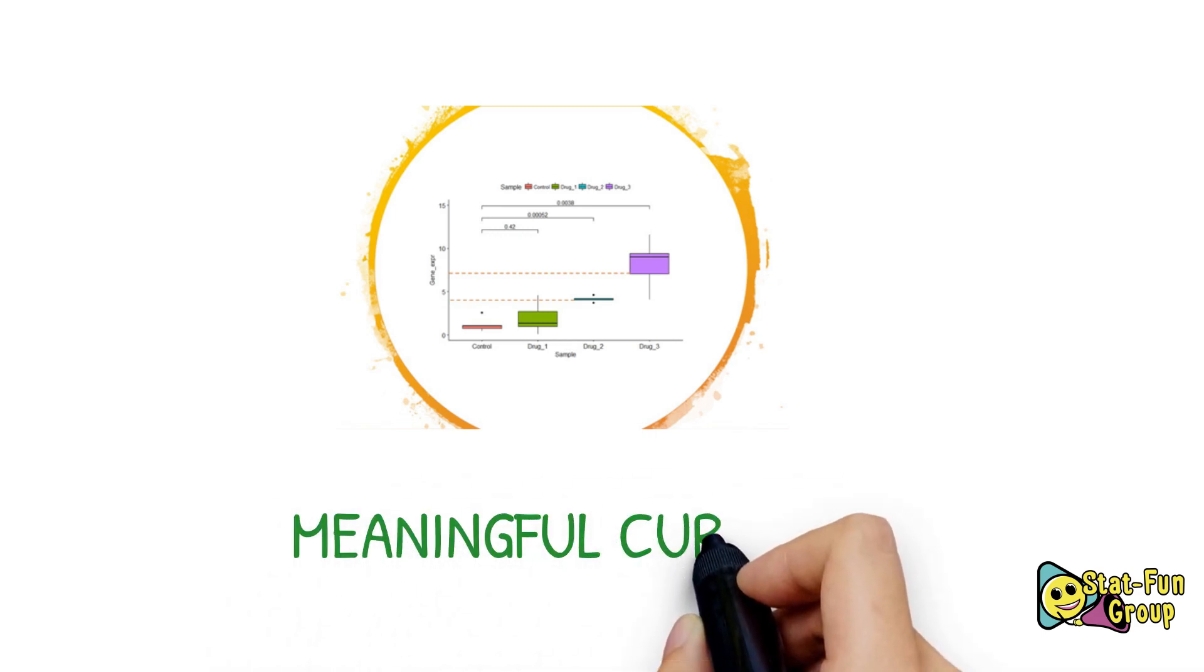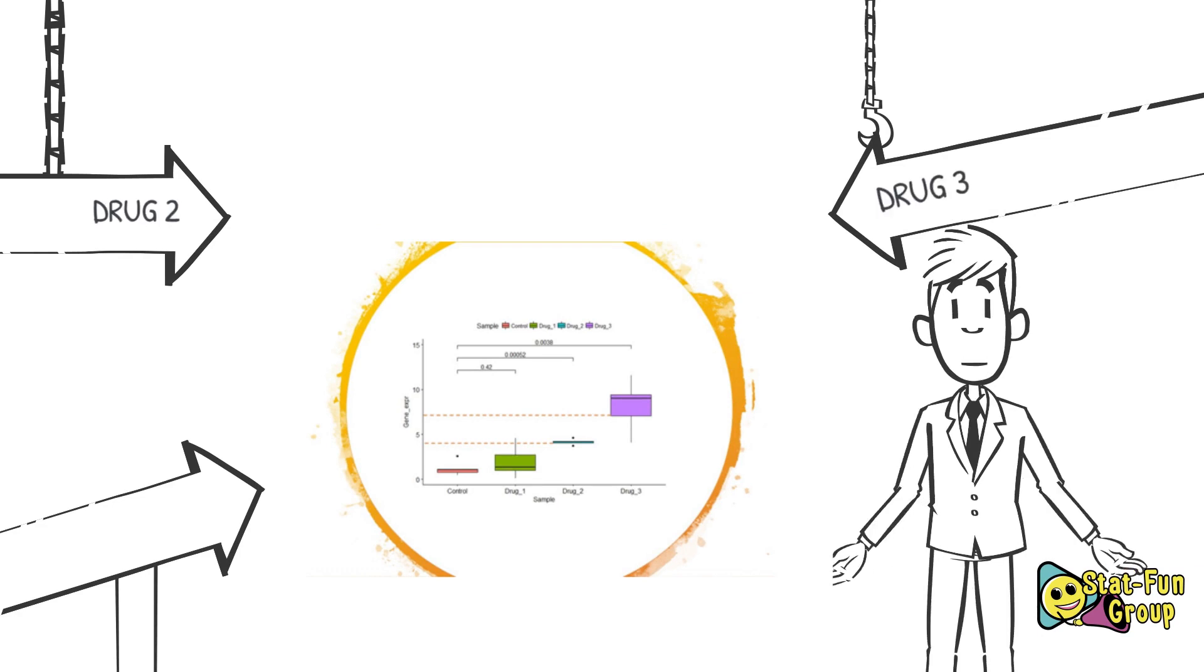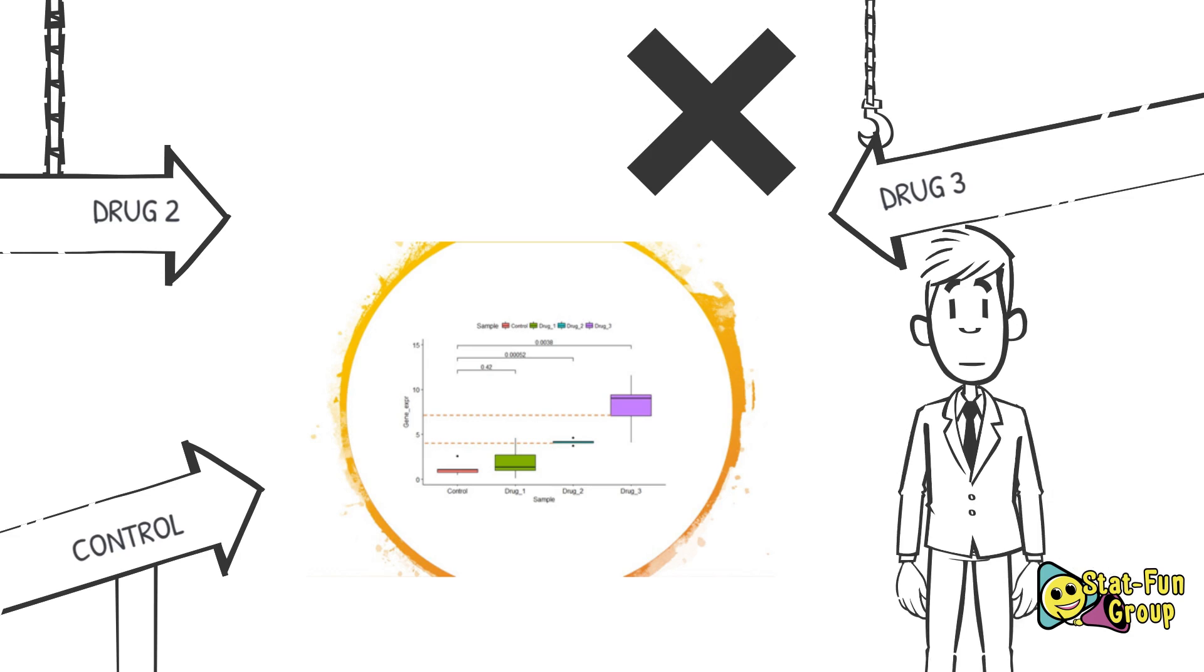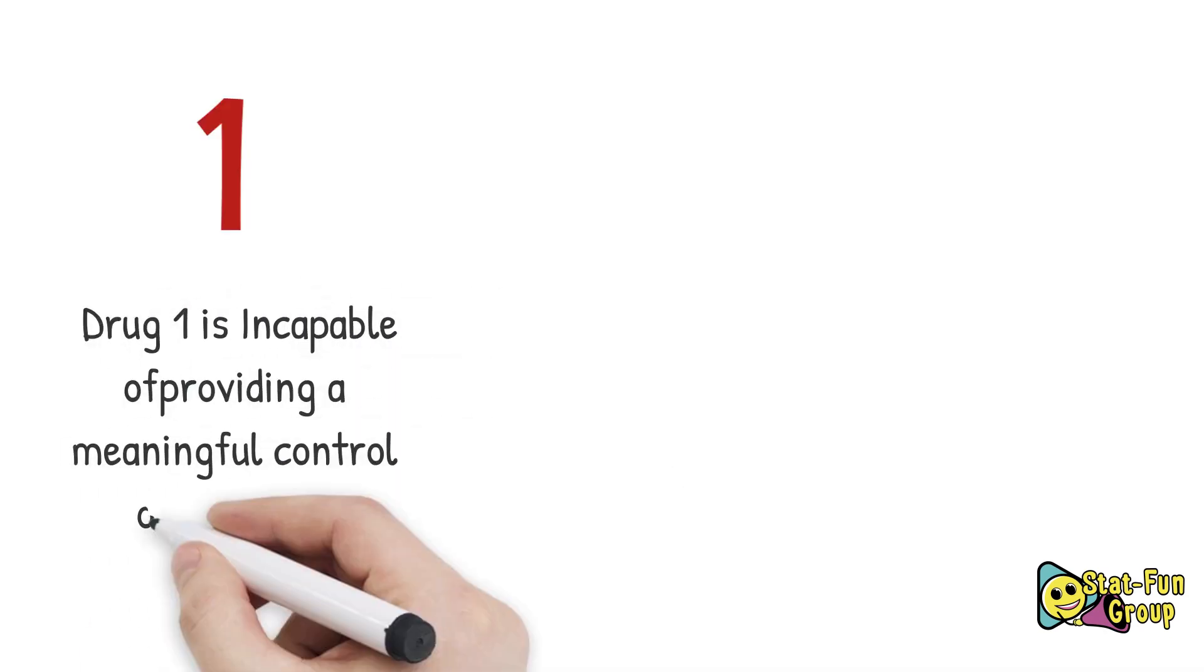In contrast to drug one, the boxes representing drugs two and three groups didn't overlap, suggesting a significant difference from control plot. Drug three's box was also higher and not overlapping with drug two's box. Therefore we can make a conclusion like this: drug one is incapable of providing a meaningful control of the virus. Drug two is capable of controlling the virus, however its effectiveness is less than drug three. Drug three is capable and showing the best effectiveness amongst all tested drugs.